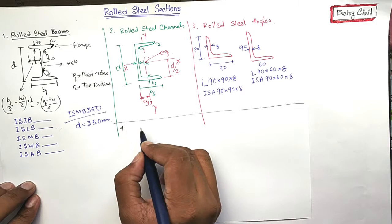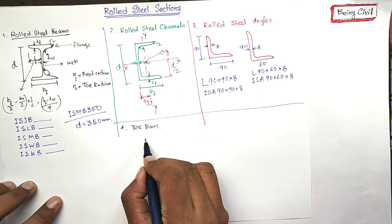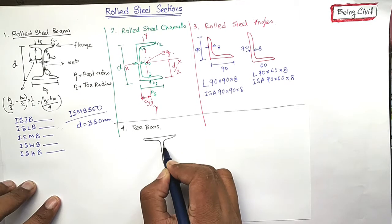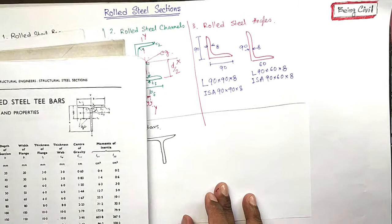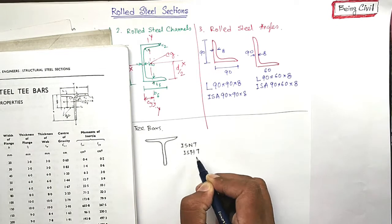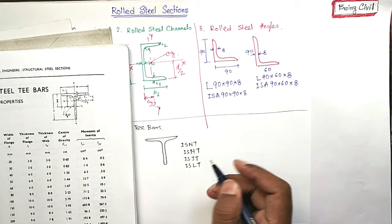Coming to the next, there is T bars. T bars are like T, like this. You see, this is the T bar. It is designated as ISNT, ISHT, ISJT, ISLT, like this.